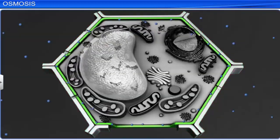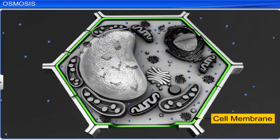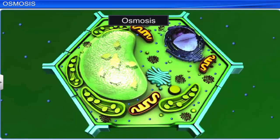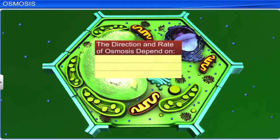The diffusion of water across a semi-permeable membrane, like the cell membrane, is referred to as osmosis. Osmosis occurs spontaneously in response to a driving force. The net direction and rate of osmosis depend on two factors: concentration gradient and pressure gradient.